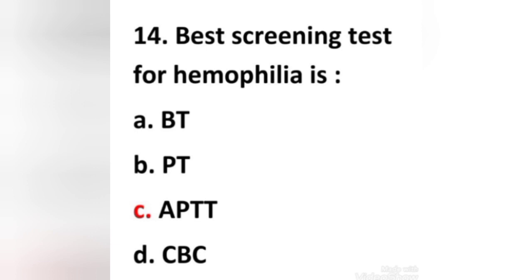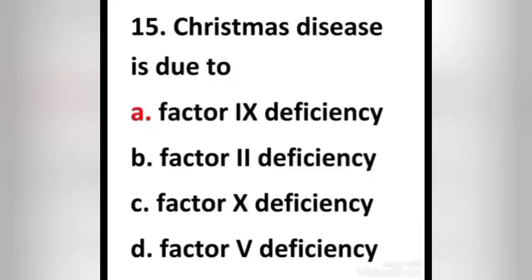Next question: Best screening test for hemophilia is — (a) bleeding time, (b) prothrombin time, (c) activated partial thromboplastin time, (d) complete blood count. Right answer is option C: activated partial thromboplastin time. This test measures how long it takes for blood to clot. It measures the clotting ability of factors 8, 9, 11, and 12. If any of these clotting factors are too low, it takes longer than normal for blood to clot, and the APTT is significantly prolonged in severe hemophilia.